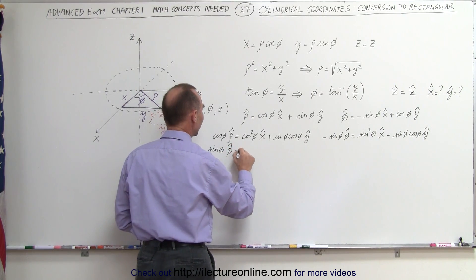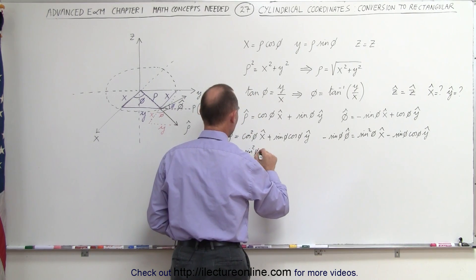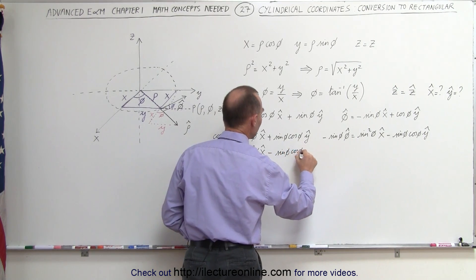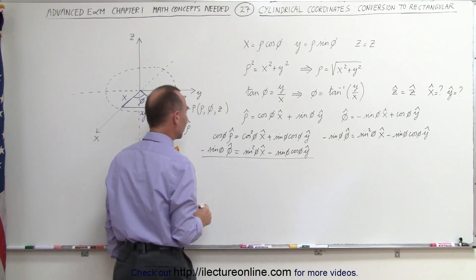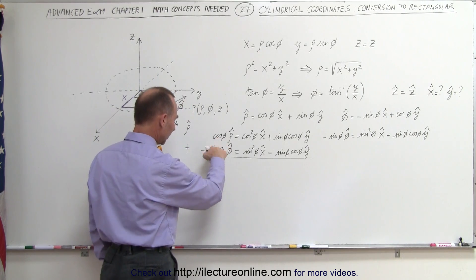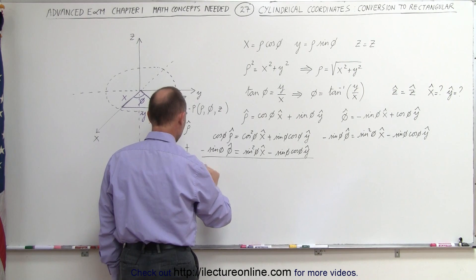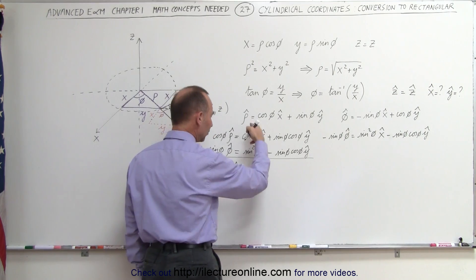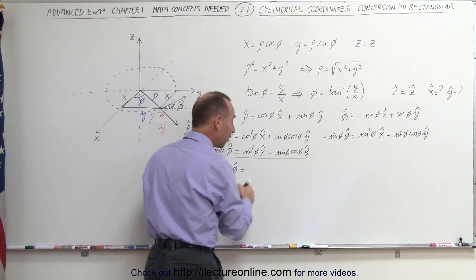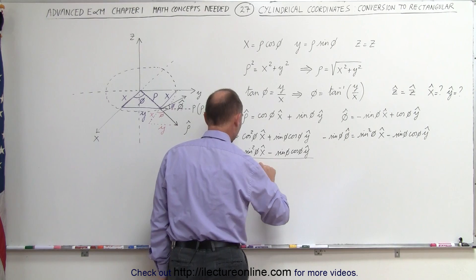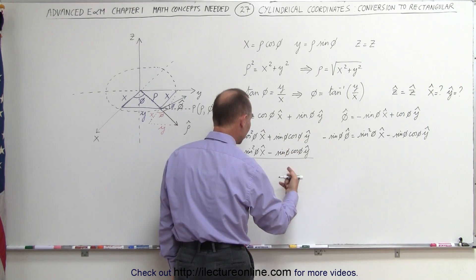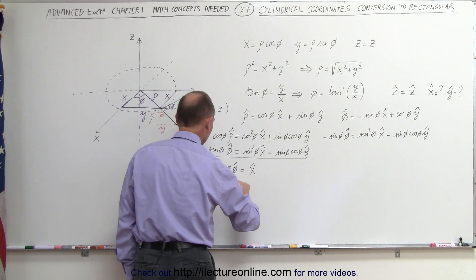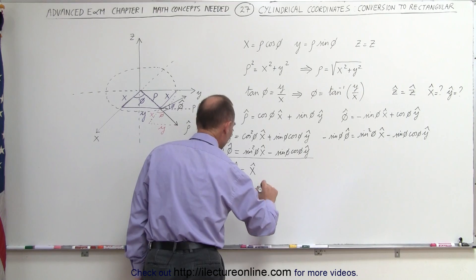Negative sine of phi times the phi unit vector equals sine squared of phi times the x unit vector minus sine of phi times cosine of phi times the y unit vector. Adding the two equations together: on the left side we get cosine of phi times the rho unit vector minus sine of phi times the phi unit vector. On the right side, cosine squared of phi plus sine squared of phi equals 1, giving 1 times the x unit vector, and the y terms cancel to zero. So the x unit vector equals cosine of phi times the rho unit vector minus sine of phi times the phi unit vector.